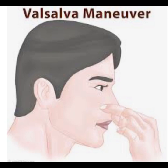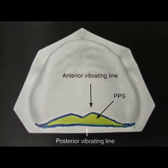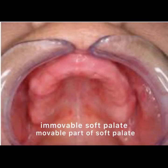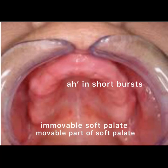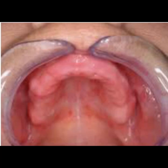The Valsalva maneuver was initially used as a treatment for tachycardia to bring down the heartbeat. It can raise and decrease blood pressure. If the patient has a middle ear infection, respiratory infection, or any underlying heart disease, there can be serious problems. Therefore, performing it just once or twice is sufficient. The posterior vibrating line is an imaginary line extending from one hamular notch to the other, at the junction of the immobile and mobile parts of the soft palate. It is recorded by asking the patient to say 'ah' in short bursts.